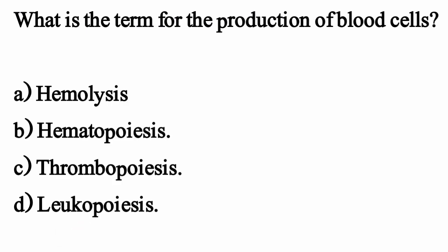What is the term for the production of blood cells? The correct option is Option B: Haematopoiesis.